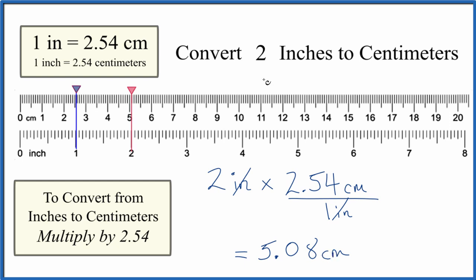And the thing you really need to remember to do this, one inch equals 2.54 centimeters. And to convert from inches to centimeters, you multiply by 2.54.